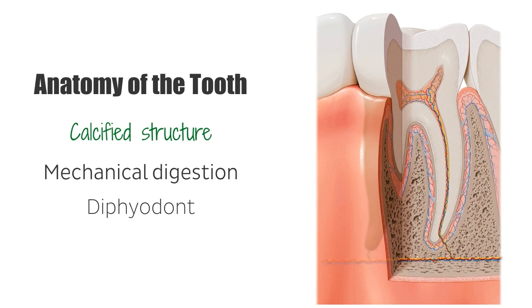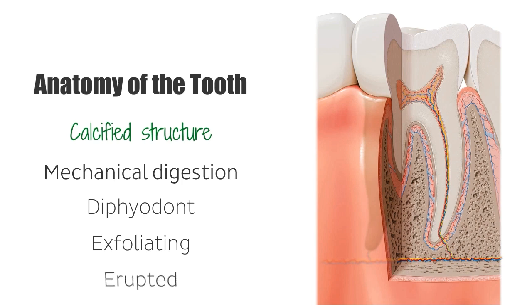Sometimes less. The deciduous dentition is usually complete by the age of 3, and by the age of 6 we begin exfoliating, which is when our deciduous teeth are lost in replacement of the permanent teeth. All permanent teeth will usually have erupted — which means become visible in the mouth — between the ages of 18 and 21.